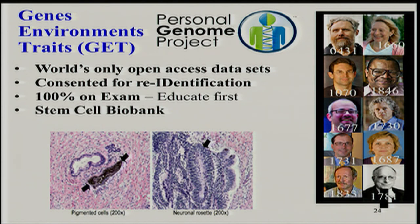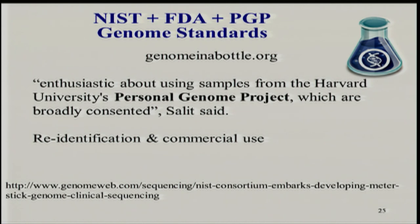Stem cells are another thing very hard to share, because just like genomes, they tell you a lot about a person. Here's a practical consequence: NIST and FDA got together on the issue of genome standards — genomeinabottle.org — wanting thousands of copies of one lot of DNA distributed to anyone developing a new diagnostic, genome service, or instrument, so they'd all be on the same page with the same genome. They looked around for properly consented genomes, and ours looks good so far in terms of consent for re-identification and commercial use.